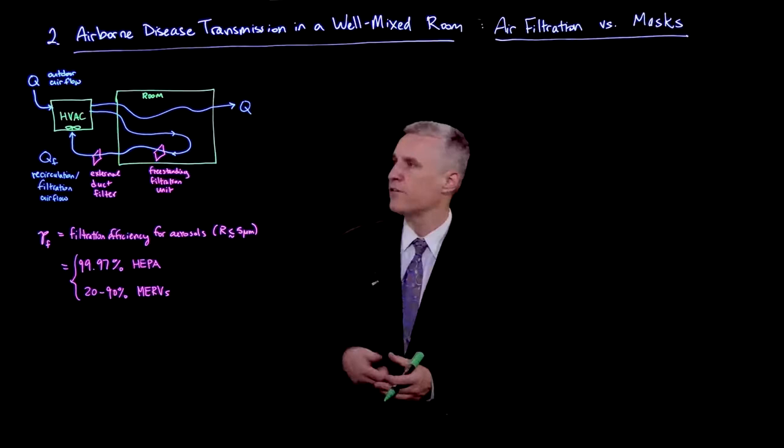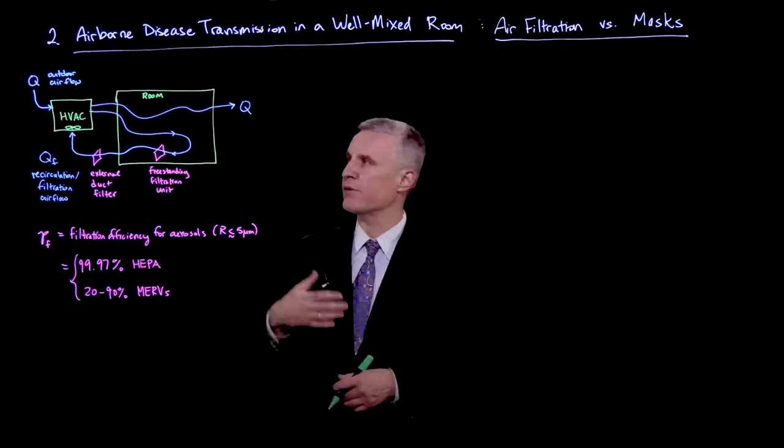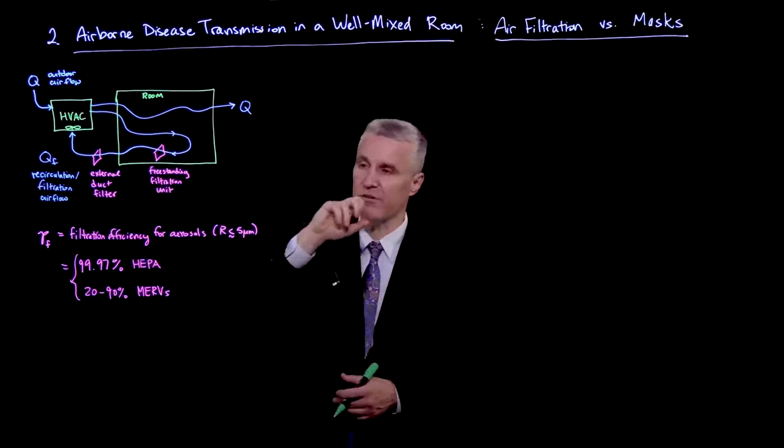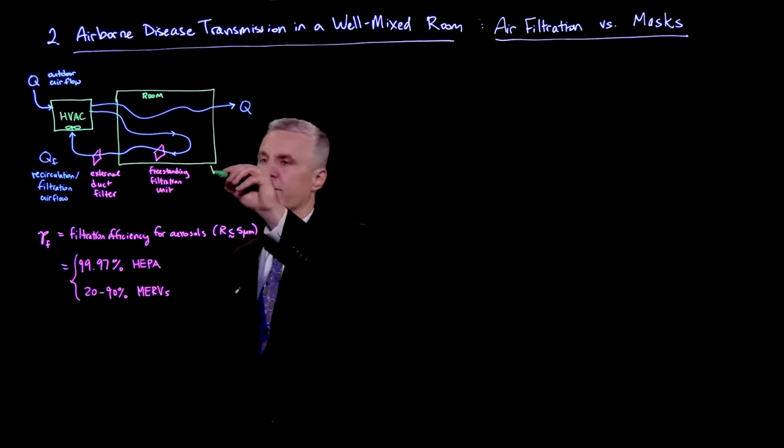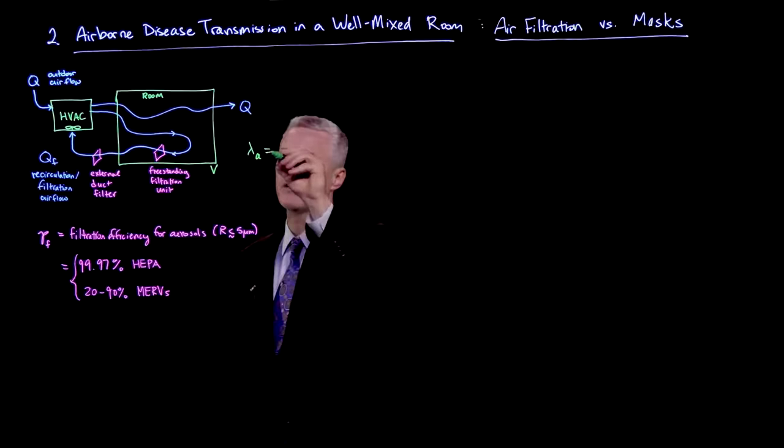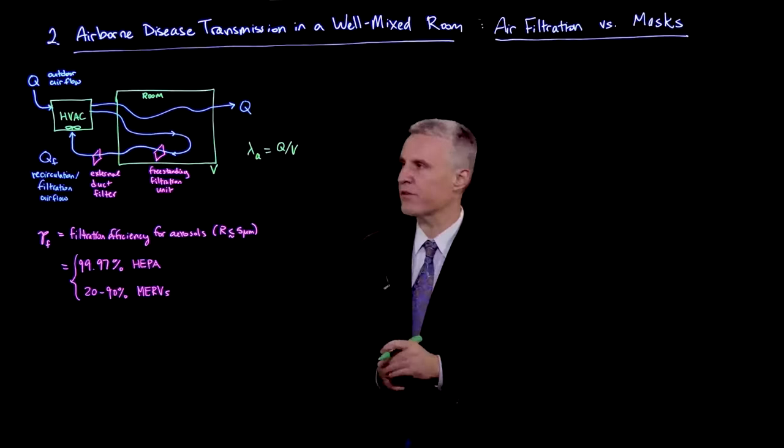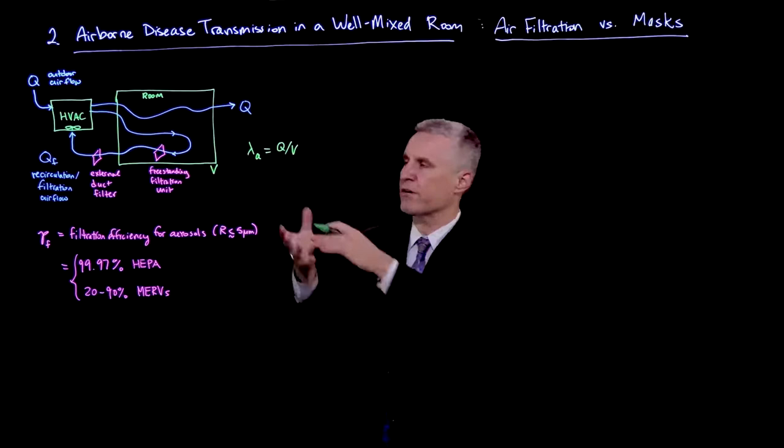So here's a schematic sketch of the air flows. We still have this Q, which is the outdoor air flow coming in from outdoors and leaving. The air change rate is based on that Q. If there's a volume V of the room, then the air change rate lambda_A was Q over V. That's units of inverse time, the residence time for the outdoor air and the changing of the air.